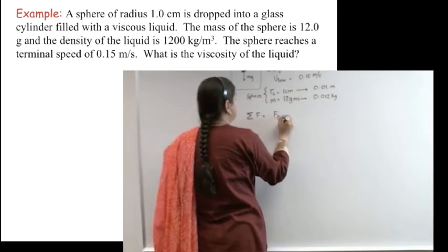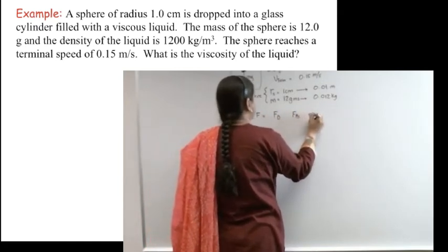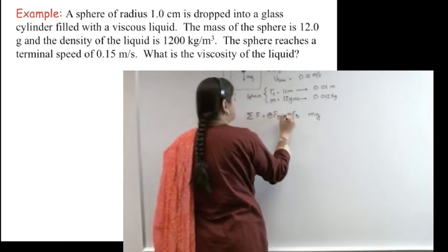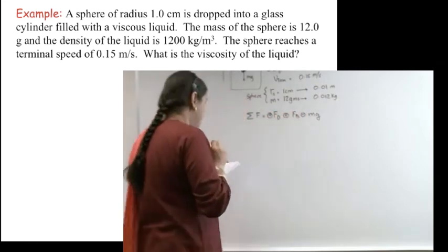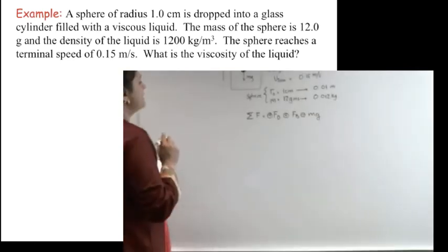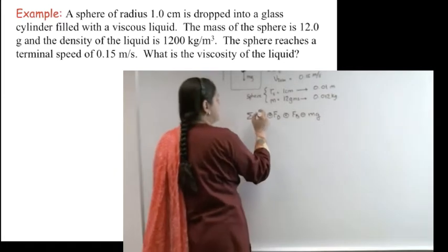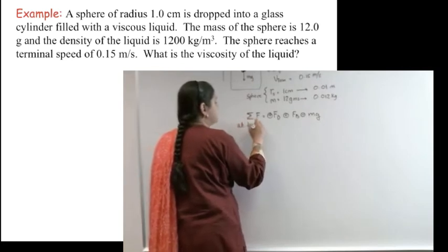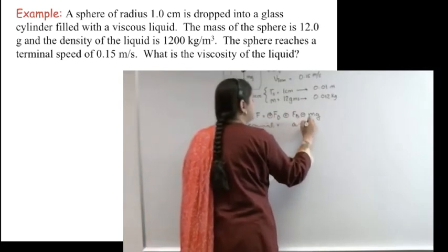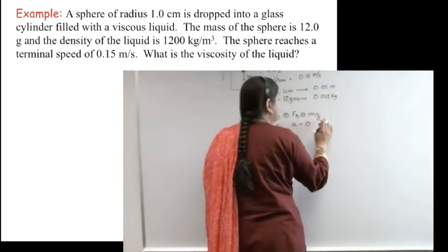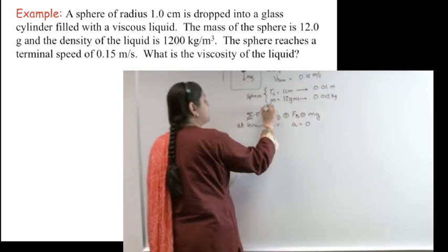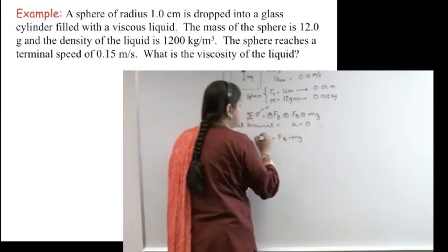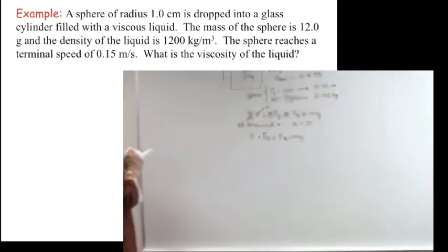Now let's write my force equation. Σf will be equal to Fd, Fb, and mg. If I take my positive axis to be upwards, that means this is going to be plus, this is going to be plus, and this is going to be minus. And then f equals ma when it starts to drop. But at terminal velocity, acceleration goes to zero, which implies this will go to zero. So what are we left with? Fd plus Fb minus mg equals zero.